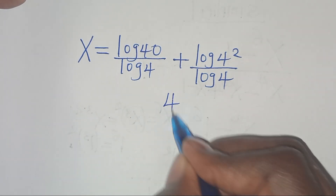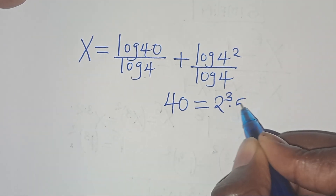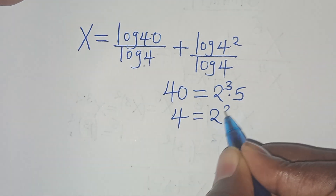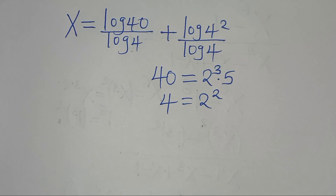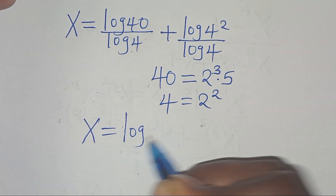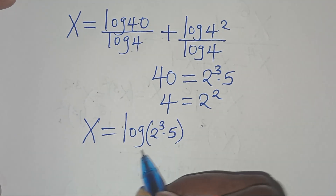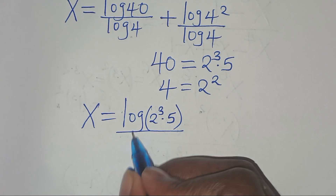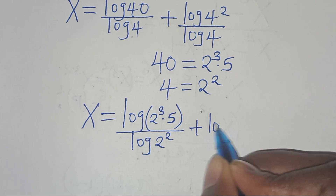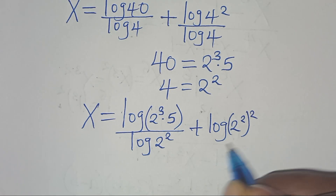We can express 40 as 2^3 multiplied by 5, and express 4 as 2^2. Substituting back into the equation, x equals log(2^3 × 5) divided by log(2^2), plus log((2^2)^2) divided by log(2^2).